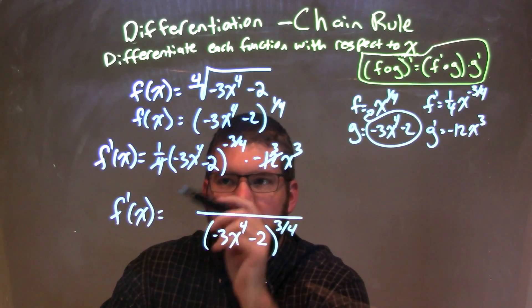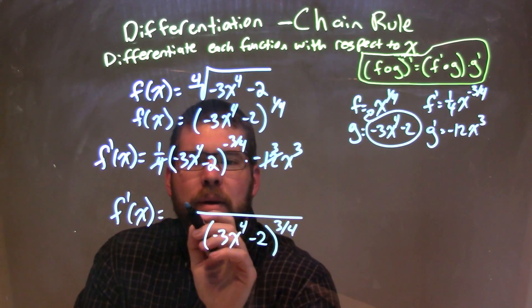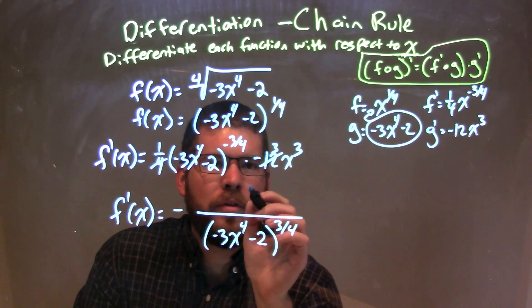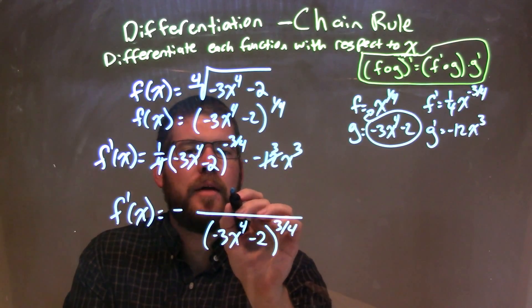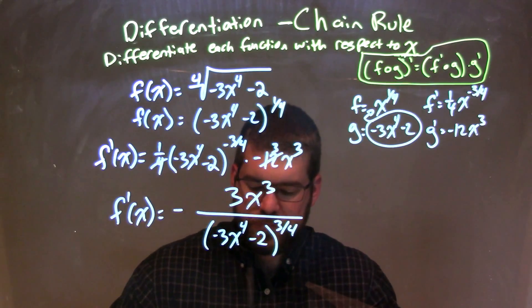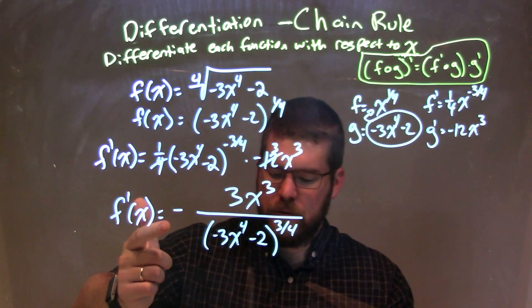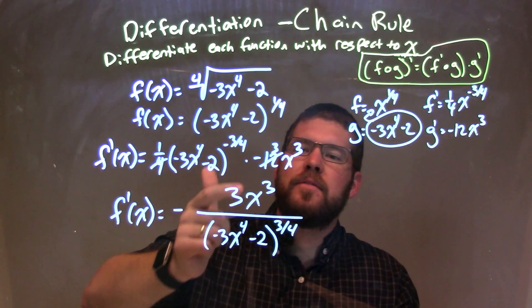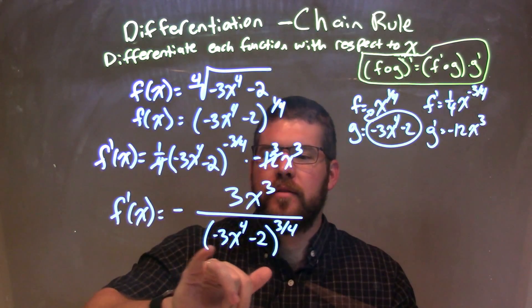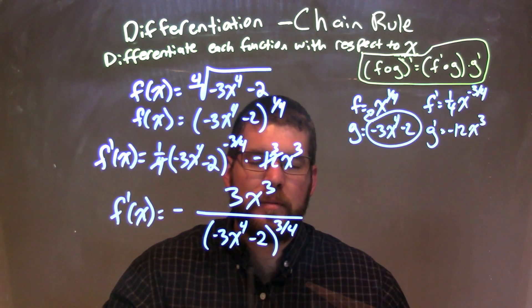All right, multiply the 12 times the one-fourth, so eliminate that to get 3. So we have a negative, and you can put the negative up front if you want, or I'll put a 3. And negative, up there, we have 3x to the third, and we have everything brought down. So now we have our final answer, is f prime of x is equal to a negative 3x to the third over parentheses, negative 3x to the fourth minus 2, and parentheses to the third, three-fourths power.